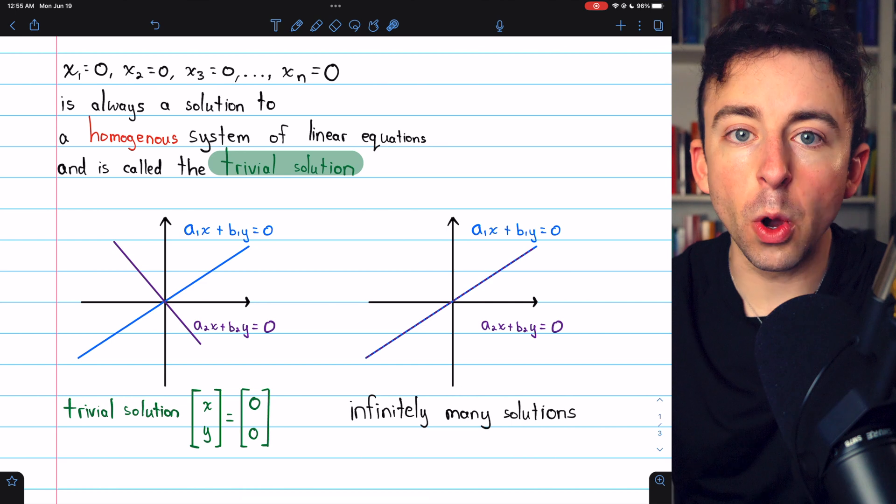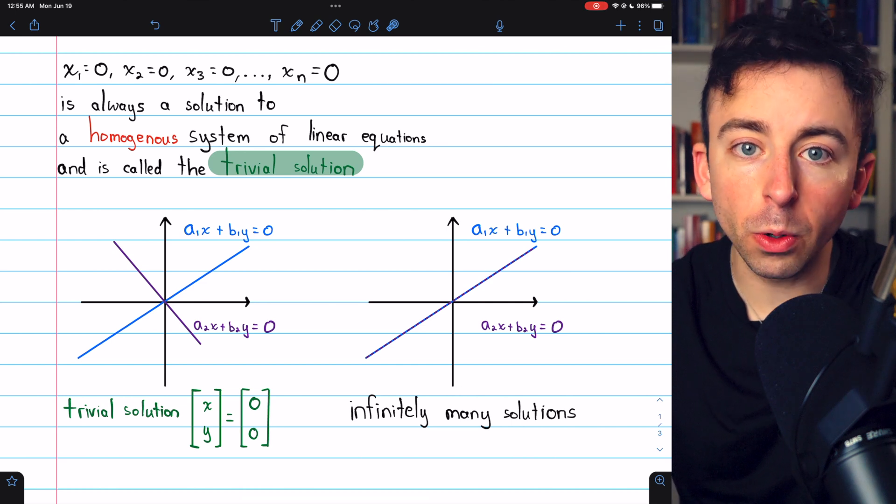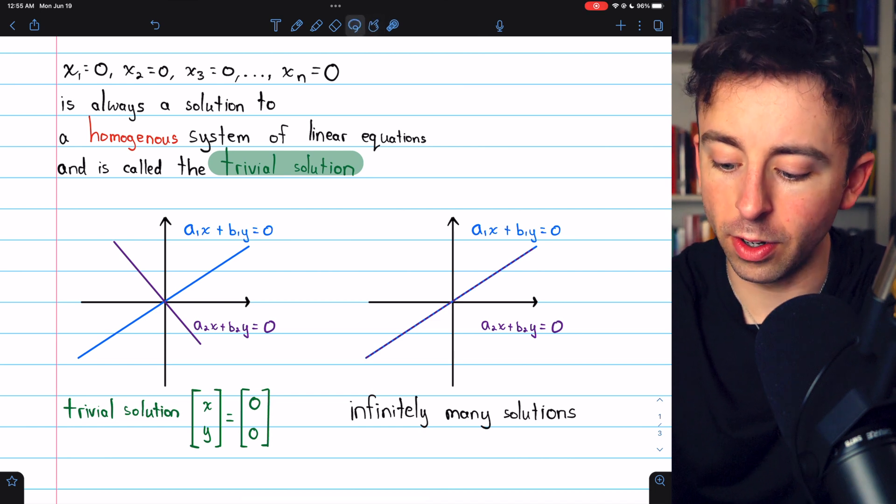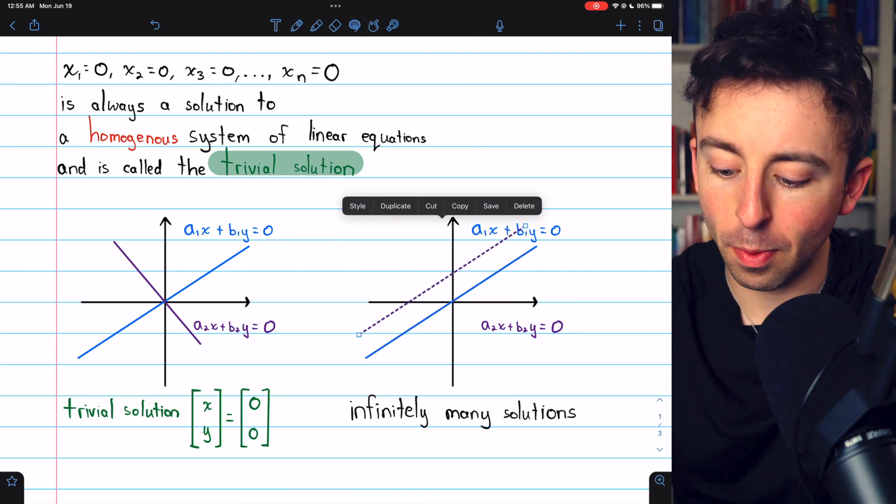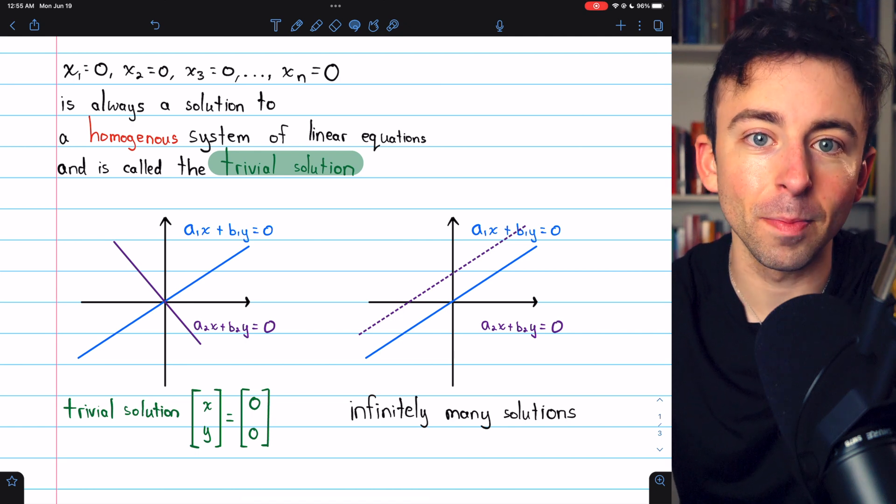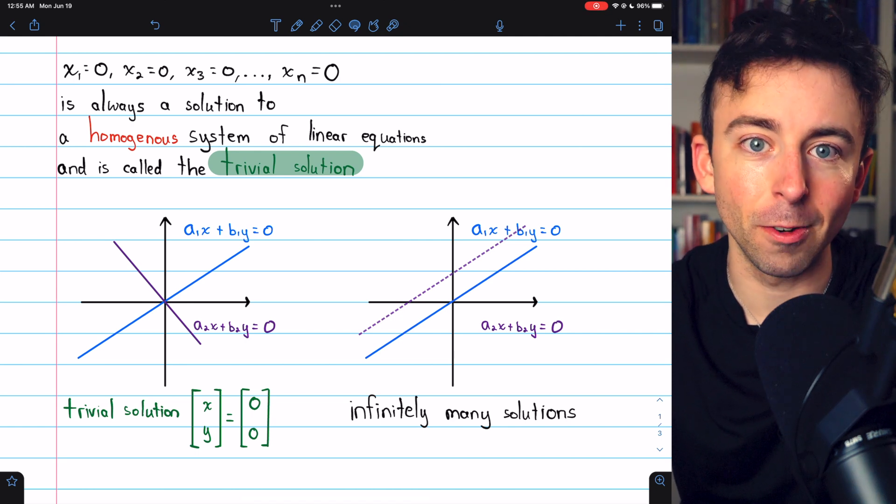Of course, the only way to get there to be no solution would be if the constant term was not zero. That way we could shift one of these lines up, but then we wouldn't be talking about a homogeneous linear system because the constants got to be zero.